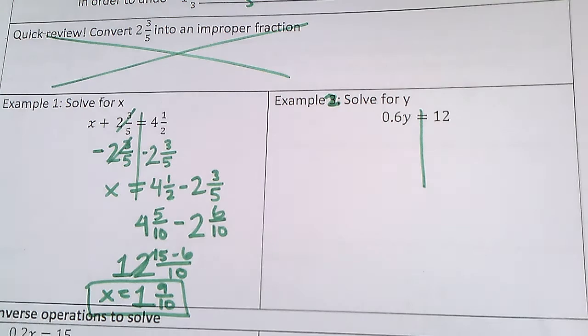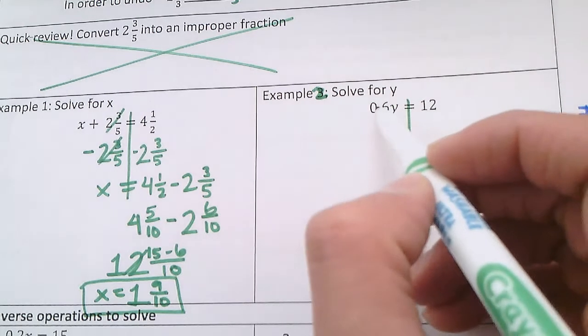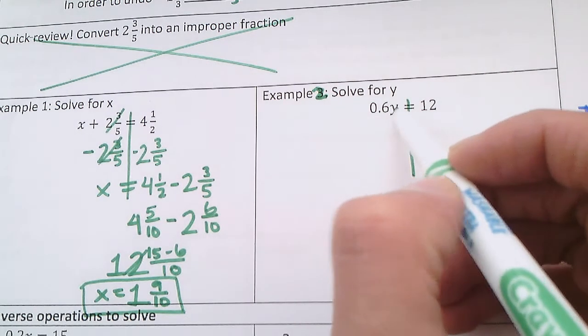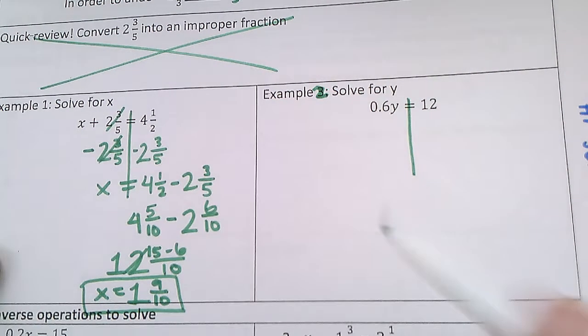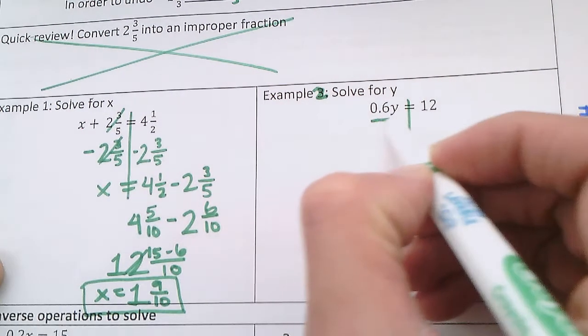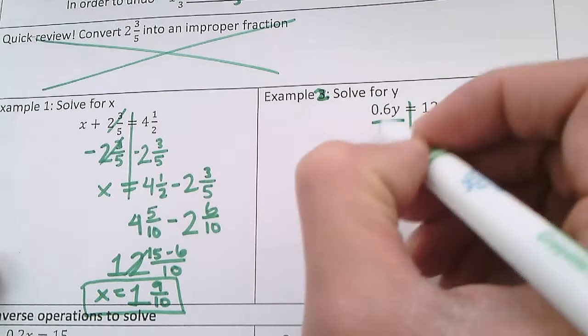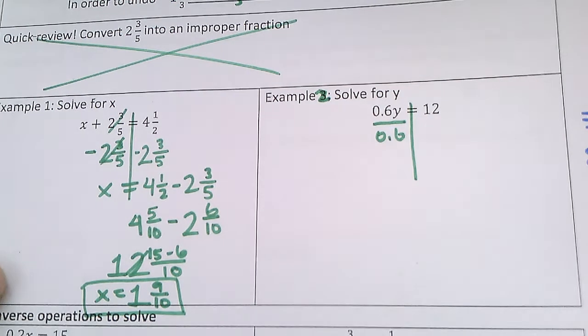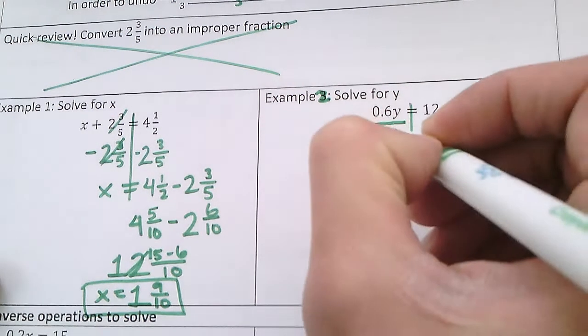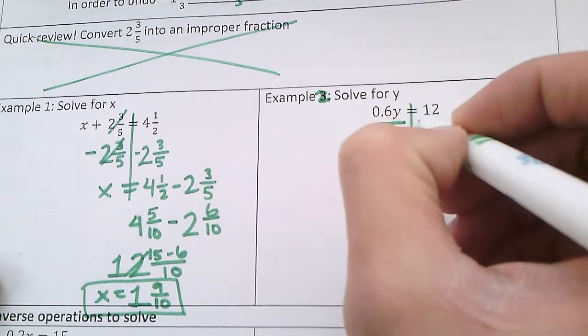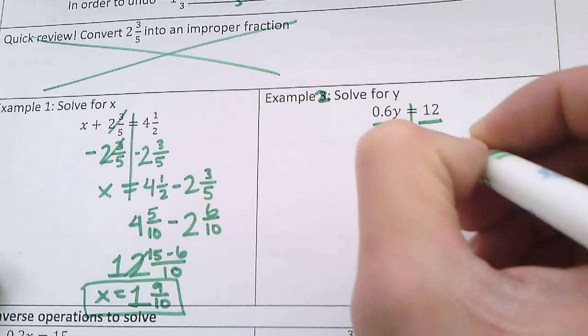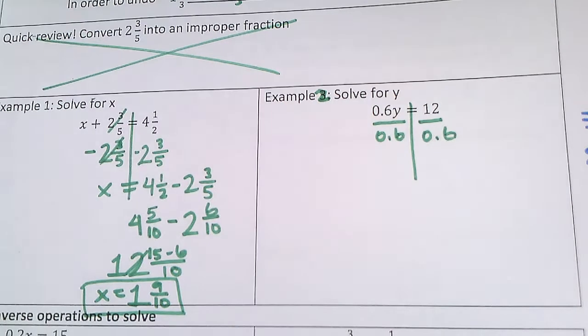And if I'm multiplying by 0.6 on this side, I have to do the opposite of multiplying, which is dividing by 0.6. And if I divide by 0.6 on the left side, I also have to divide by 0.6 on the right side.